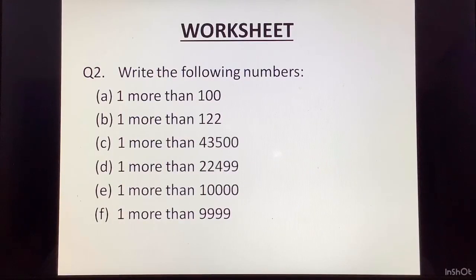Next, question 2. Write the following numbers. 1 more than 100. Second, 1 more than 122. Third, 1 more than 43,500. Fourth, 1 more than 22,499. Next, we have 1 more than 10,000. And the last one. 1 more than 9,999.